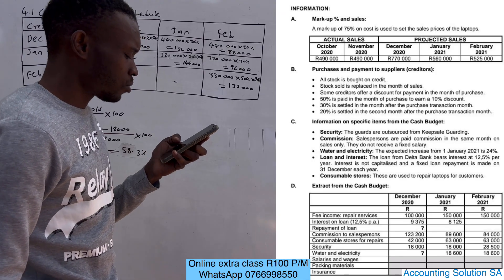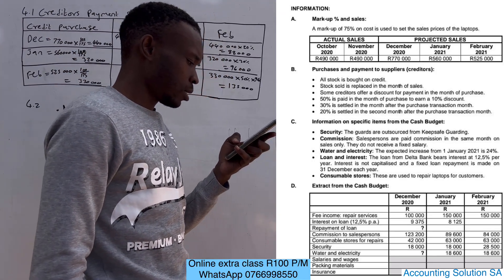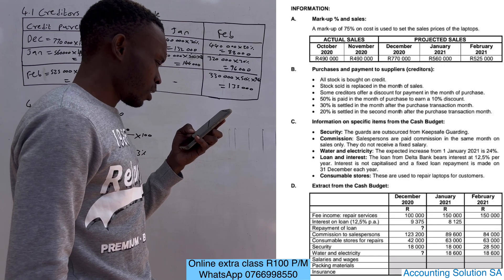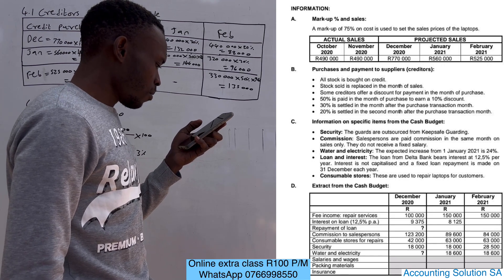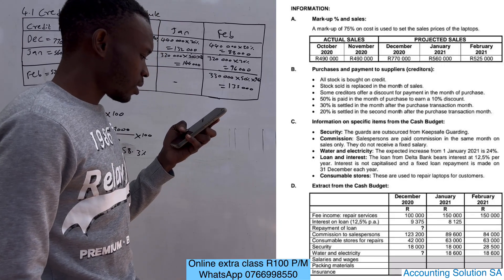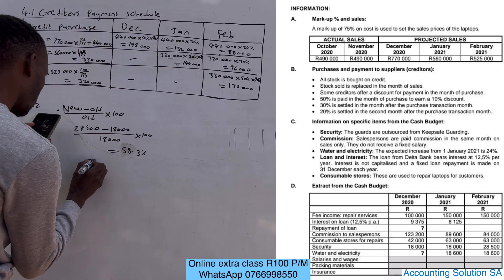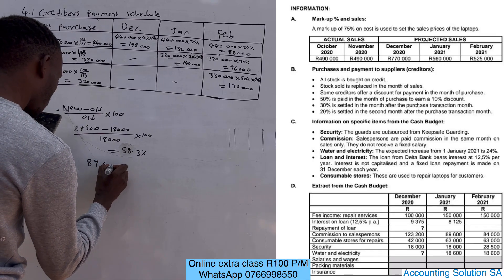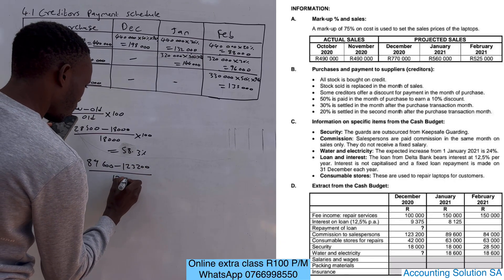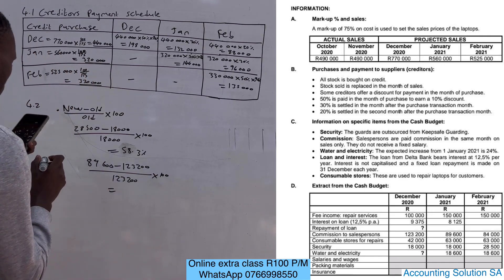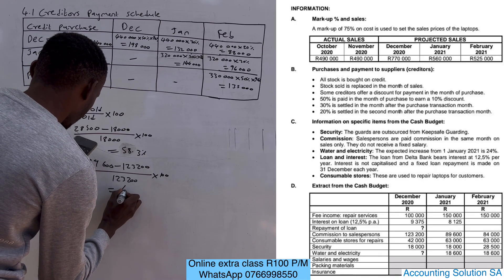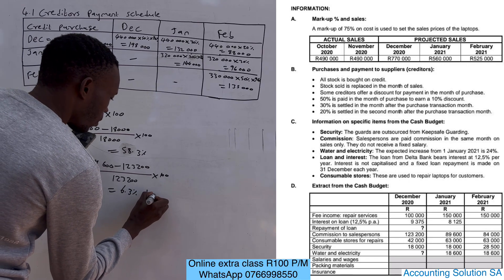Next, calculate the percentage change in commission paid to sales persons. Commission for December came from 123,200 going down to 89,600. Using the same formula: new is 89,600 minus old 123,200, divided by 123,200, multiplied by 100. This gives a decrease of approximately 27.3 percent. Make sure you first calculate the numerator and then divide so that you don't get a different figure.